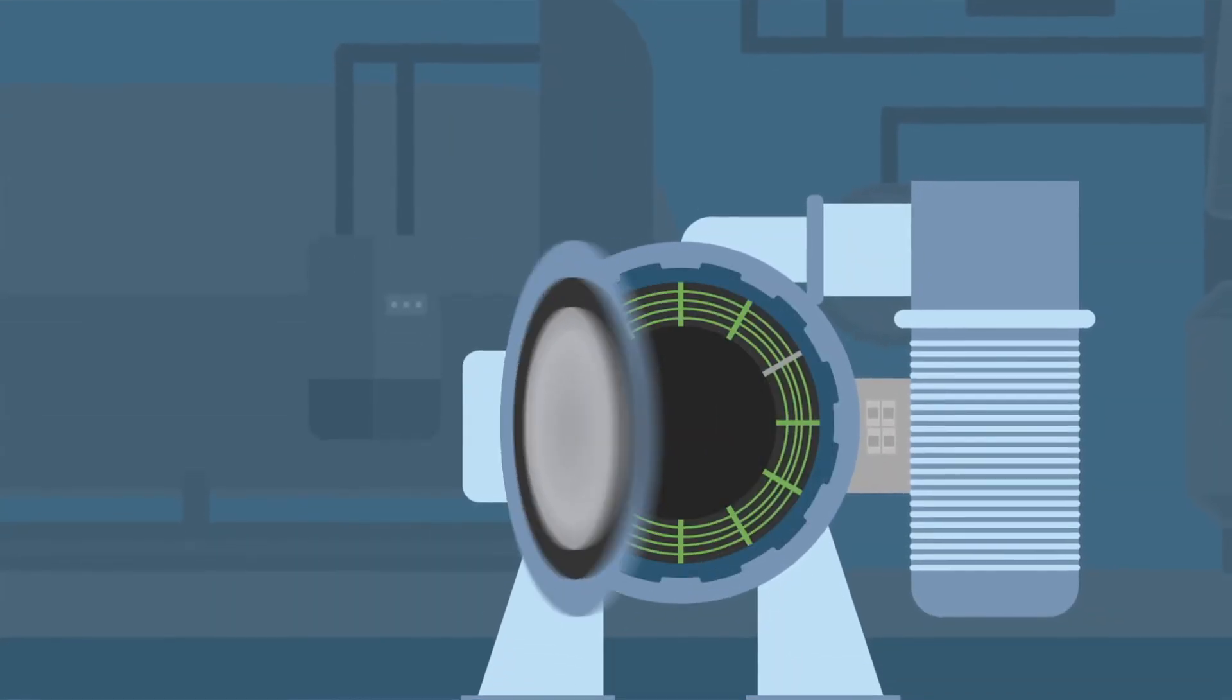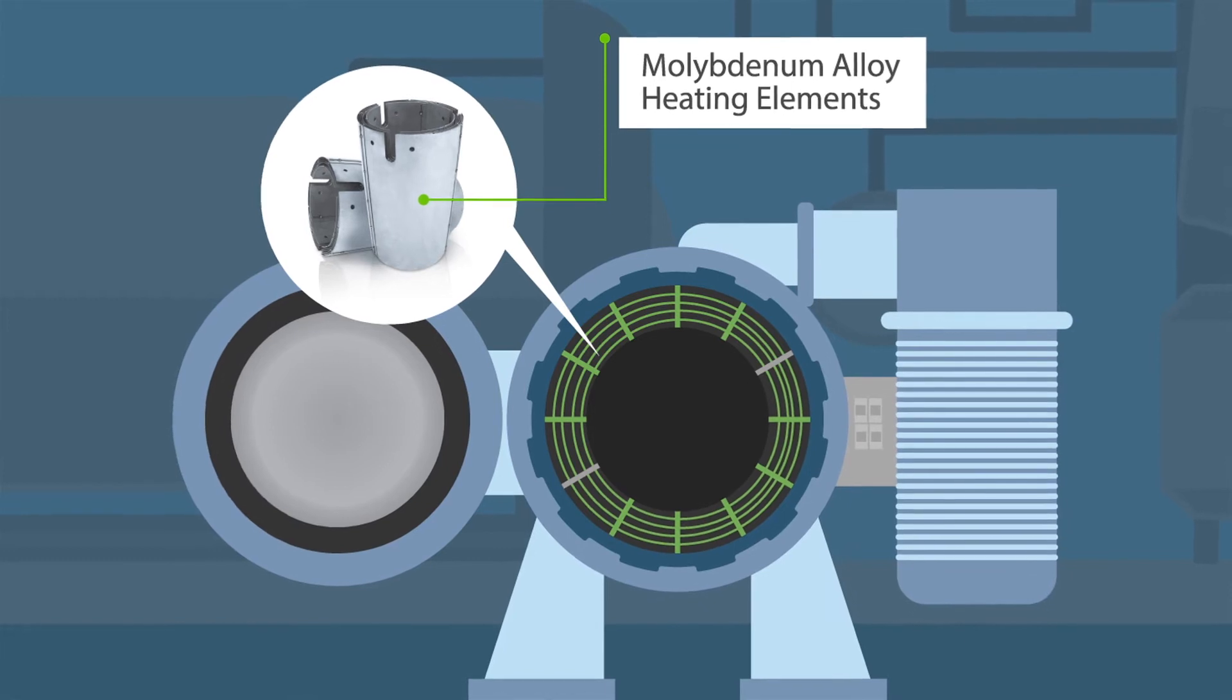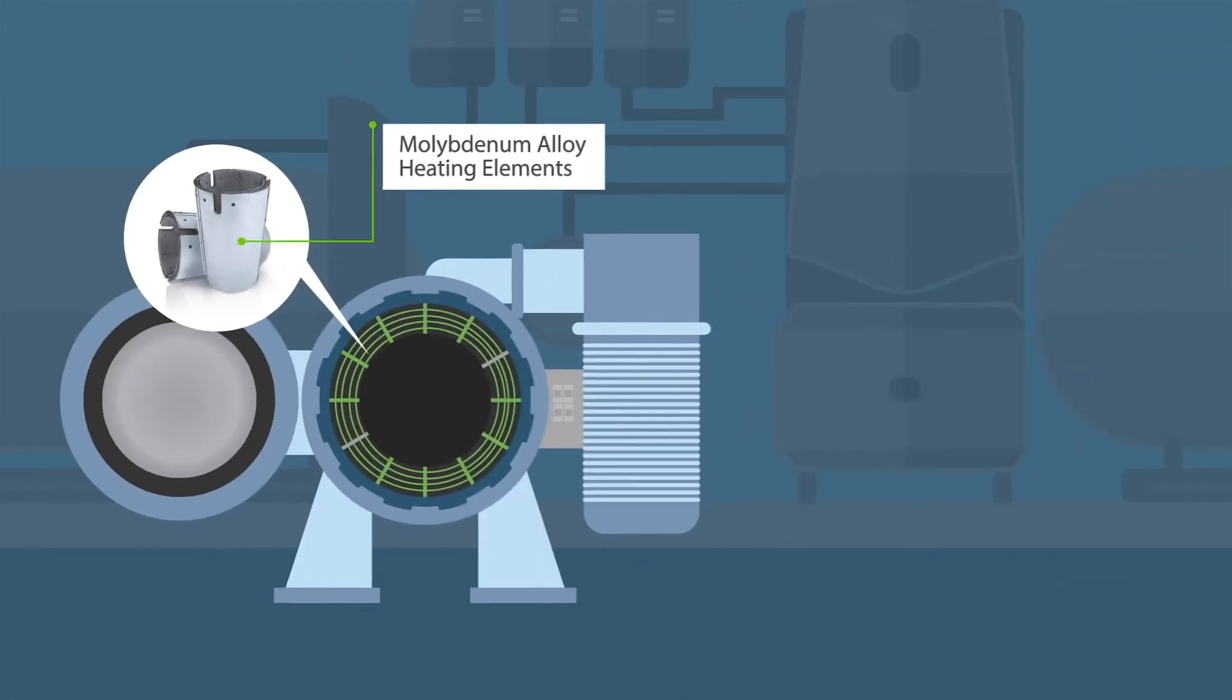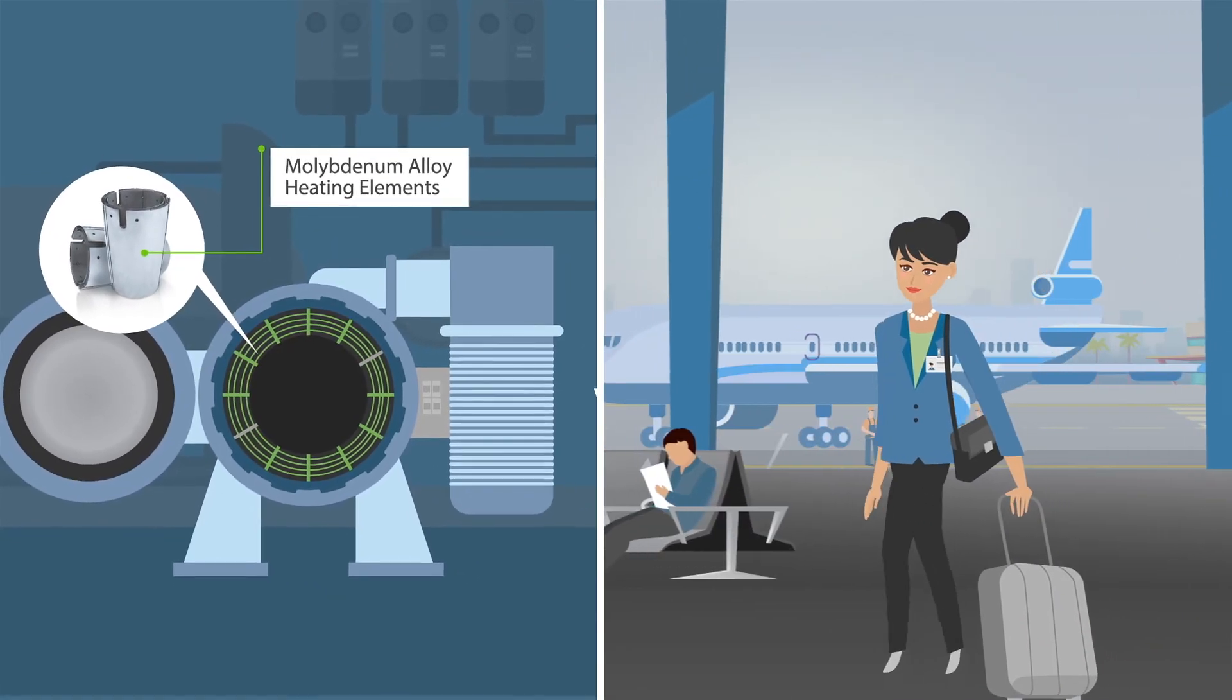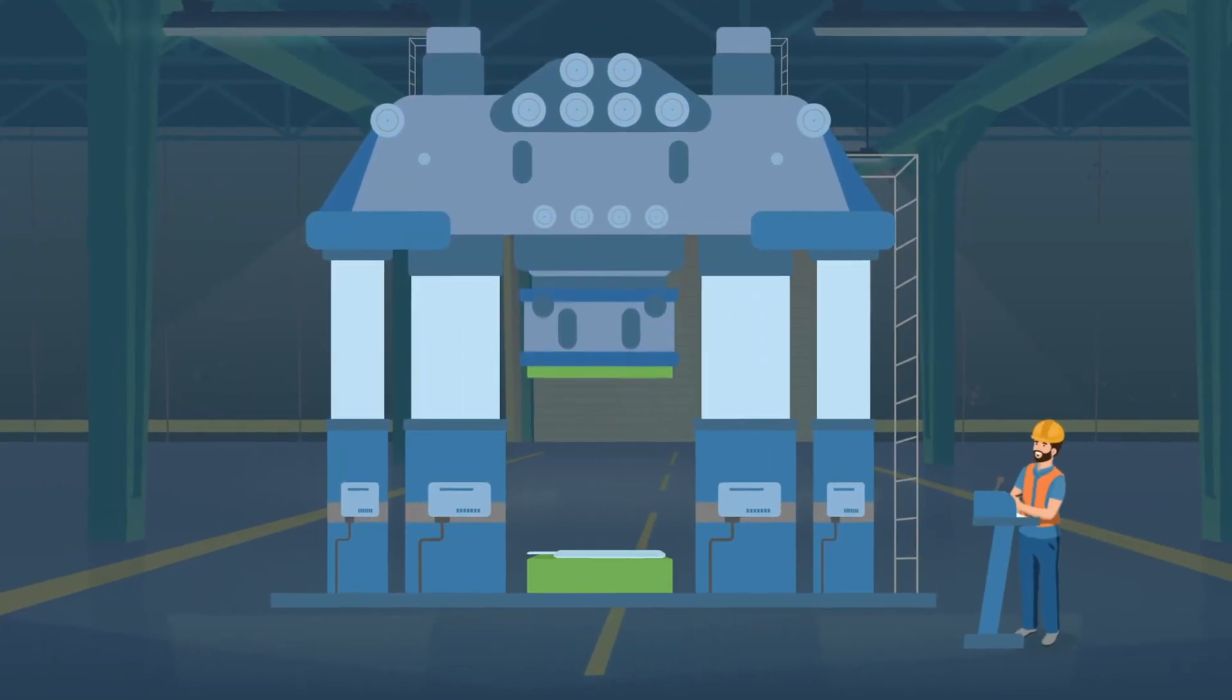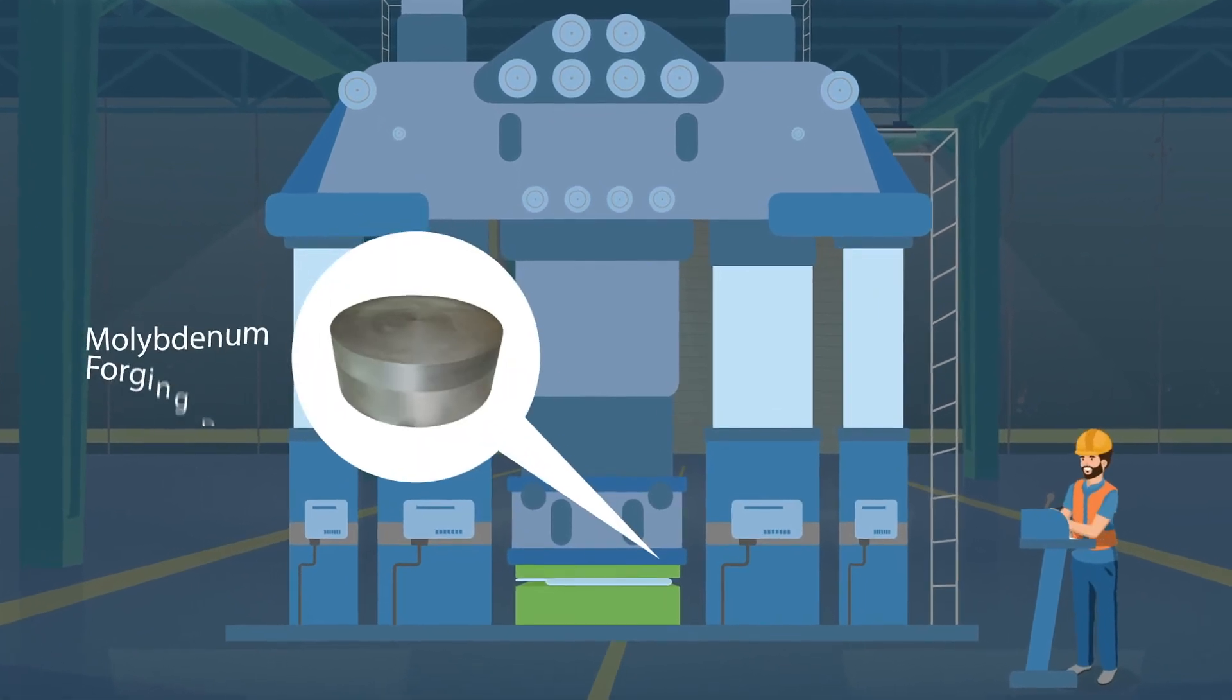H.C. Stark Solutions' molybdenum alloy heating elements, racks, and various other high-temperature capable parts are used in industrial furnaces, including vacuum furnaces that manufacture most airplane components. Airplane turbine blades are forged using H.C. Stark Solutions' molybdenum alloy dies.